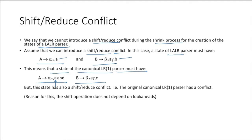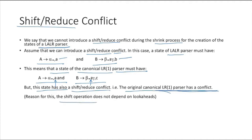What you can notice here is that the lookahead of one production rule is appearing after the dot of another production rule. If this condition is true, it is only going to introduce a shift-reduce conflict in the merging process, but this state also has a shift-reduce conflict in the original canonical LR parser. The shift operation does not depend on the lookahead — shift operations are independent of lookahead. Lookaheads only affect reduce operations.